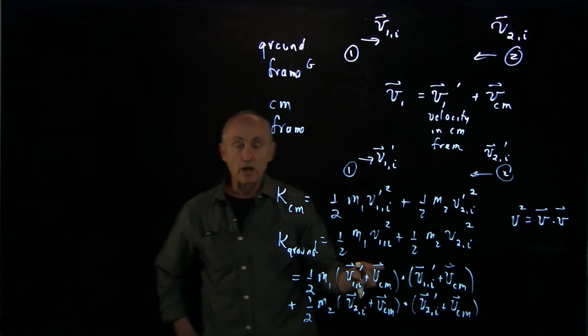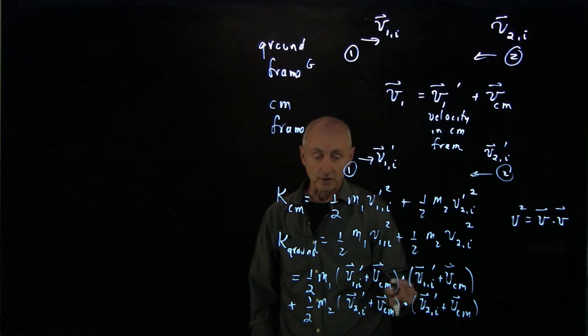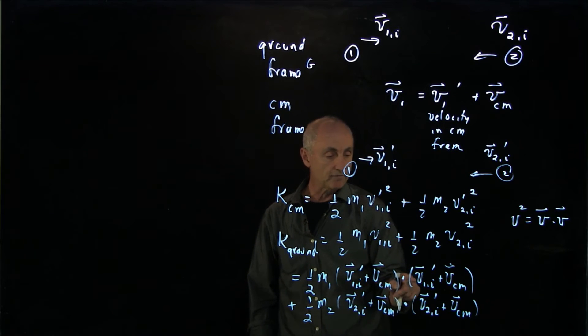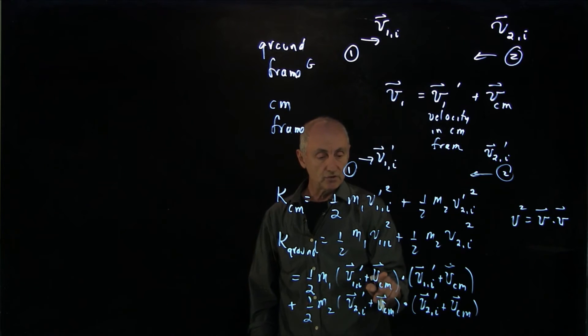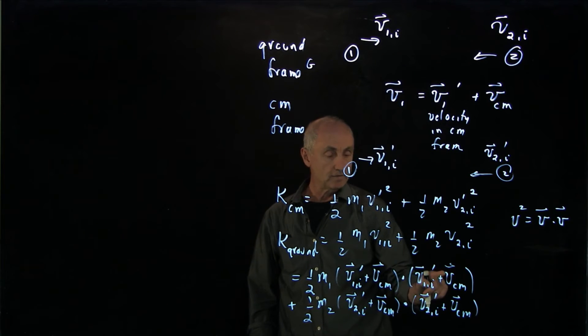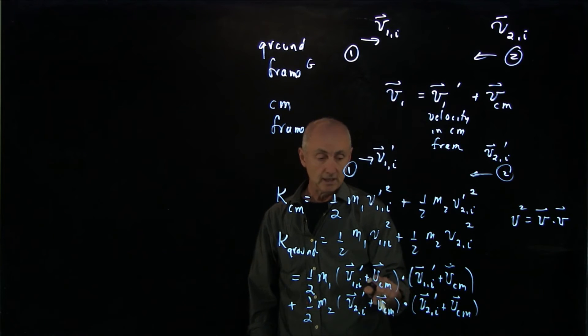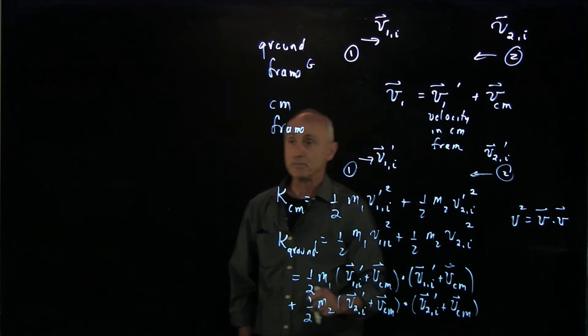Now when you take a dot product, remember there's four terms here. There is v1 prime dot v1 prime, which is just v1 prime squared. There is v center of mass dot v center of mass, so that's v center of mass squared. And then there's the cross term. Because they're identical, there's a factor of two, and it will be repeated below.